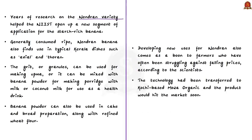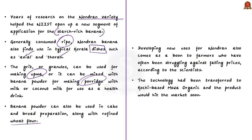The years of research on the Neendran variety helped NIIST to open up a new segment of application for the starch-rich banana. The Neendran banana is generally consumed ripe and finds use in typical Kerala dishes such as avial and thoran. The grit or granules can be used for making upma, or mixed with banana powder for making porridge with milk or coconut milk as a health drink. Banana powder can also be used in cake and bread preparation along with refined wheat flour. Developing new uses for Neendran also comes as a boon to farmers who have often struggled against falling prices. The technology has been transferred to Kochi-based Moosa Organic and the product will hit the market soon.